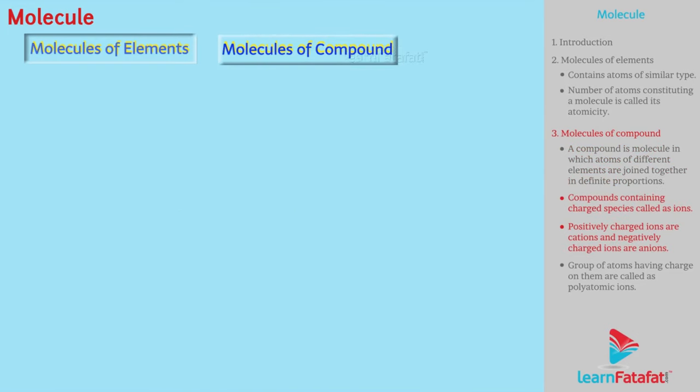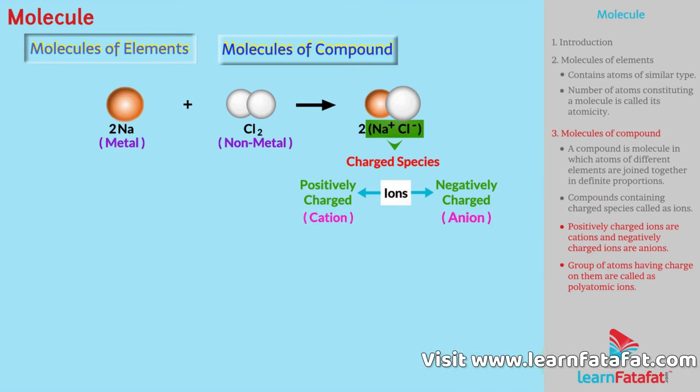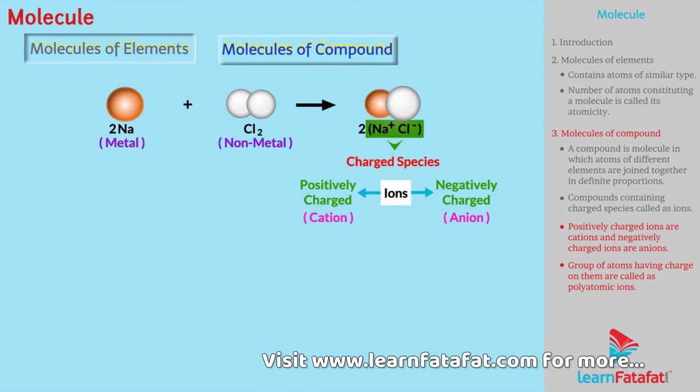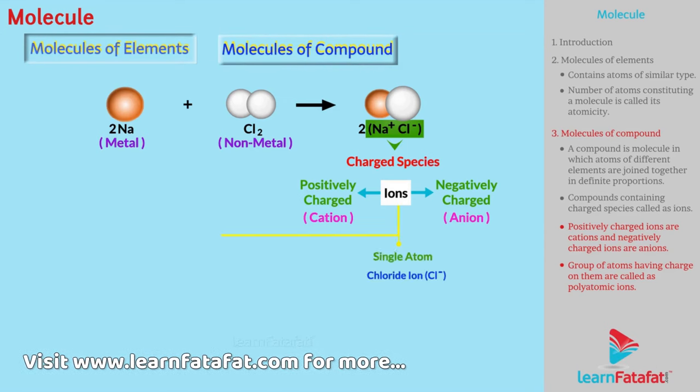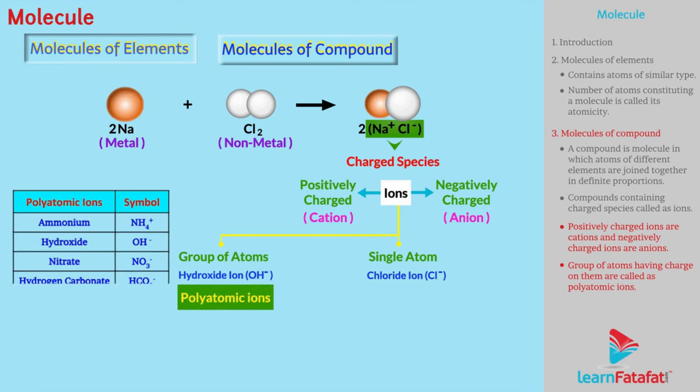There are many compounds that are formed by combining metals and non-metals. Such compounds contain charged species. These are called ions. Ions can be positively charged or negatively charged. Positively charged ions are cations and negatively charged ions are anions. It is interesting to know that ions contain not only single atom but also group of atoms having charge on them. Such atoms are called polyatomic ions.